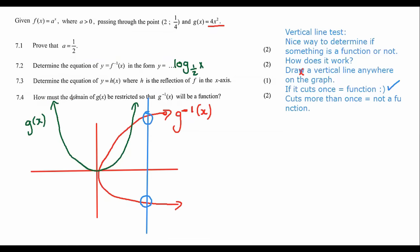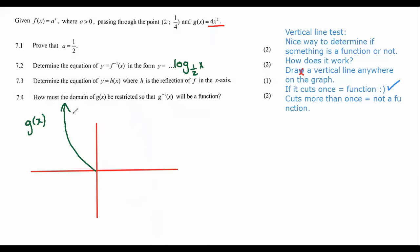So what they are asking us is, how must the x values of g, which is the green graph, how must we restrict that so that the inverse will be a function? Well, if we want the inverse to be a function, then we cannot have a vertical line cutting twice like that, because then it's not a function. So how do we fix that? It's very simple. We do the following. You either only use this half over here, or you only use this half over here.